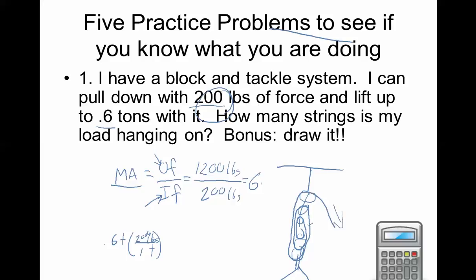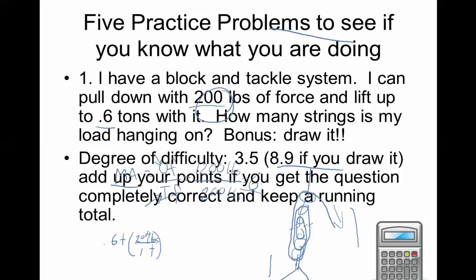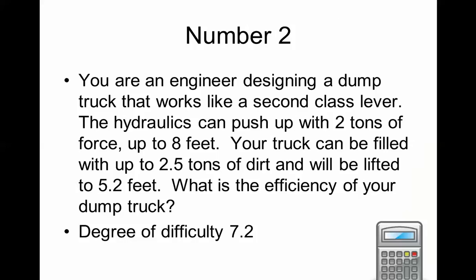Counting the strings: one, two, three, four, five, six — it's hanging on six strings. So I'm dividing my load by six, only pulling with 200 pounds to lift up a 1,200-pound load. The trade-off is that if I want this to go up one meter, I would have to pull six meters of rope.